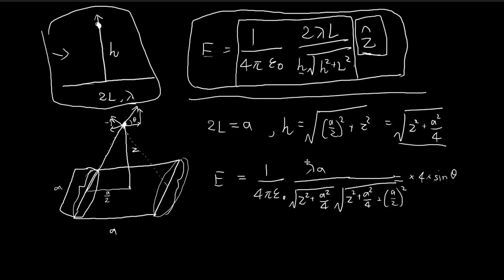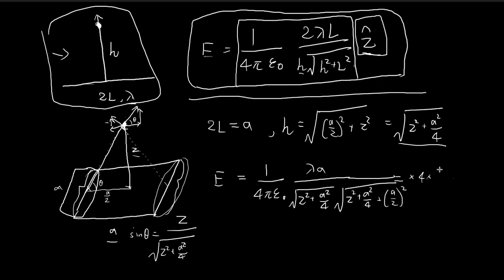Now all we need is an expression for sin θ in terms of a and z. Using a bit of geometry — since these lines are parallel, this angle is also θ. For this triangle, sin θ equals z divided by the hypotenuse, which is √(z² + a²/4). So sin θ = z / √(z² + a²/4). Now we can substitute this directly into the expression.